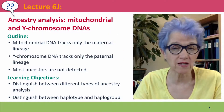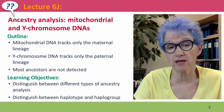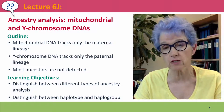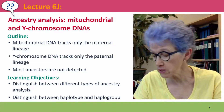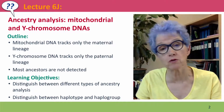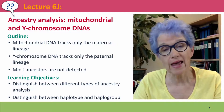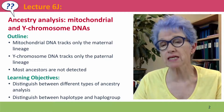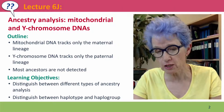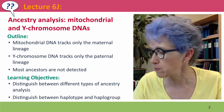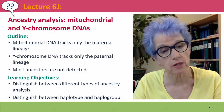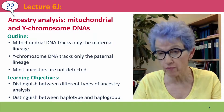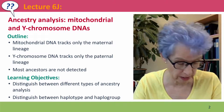Hi, everyone. Welcome back to Lecture 6J of Easeful Genetics, where we're going to talk about two particular kinds of ancestry analysis using mitochondrial DNA and Y-chromosome DNA. These two forms of analysis trace two different kinds of very specific subsets of our ancestry — the maternal lineage and the paternal lineage. They miss most of our ancestors, but they have been very powerful for other kinds of information.